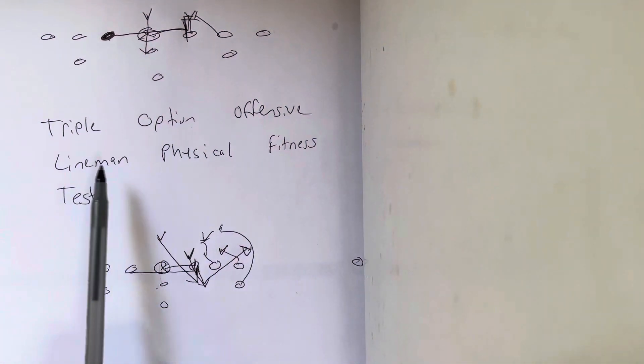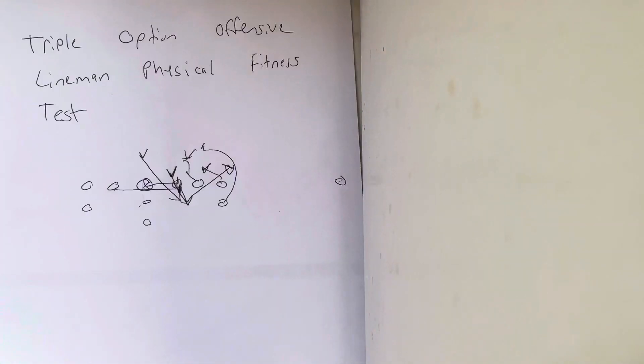Triple option offensive lineman physical fitness test. You want to prove if your kid's too fat to play in the offense, test them on this. And test them on that. Because I'm going to tell you right now, if they fail, they can't play for you.